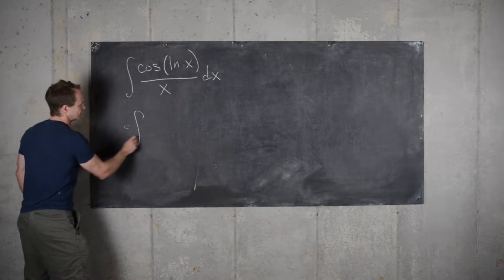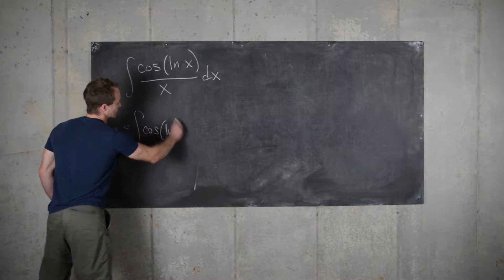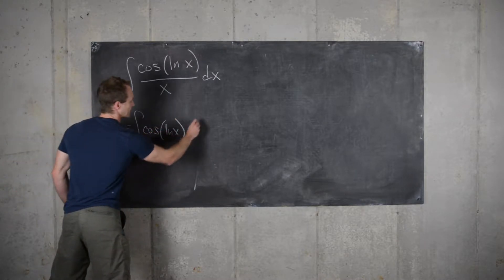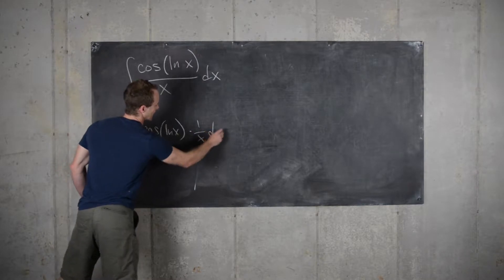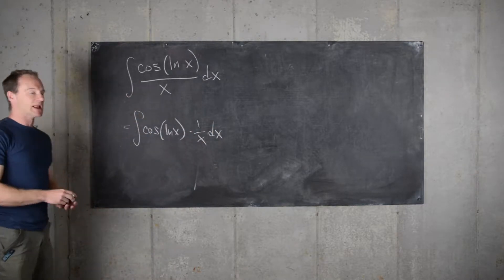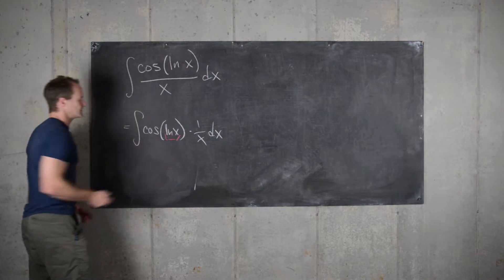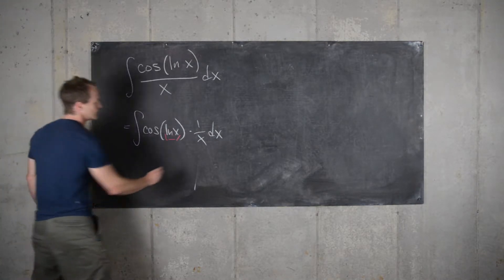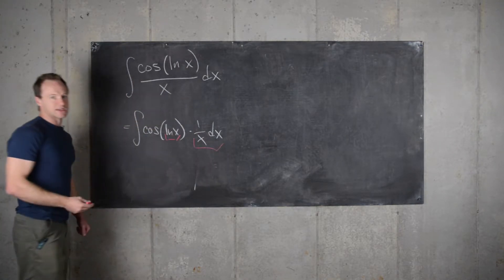Let's rewrite this as cosine of the natural log of x, and now we can write this as times 1 over x dx. And now we can see we have one function composed inside of another whose derivative is also inside the integral.